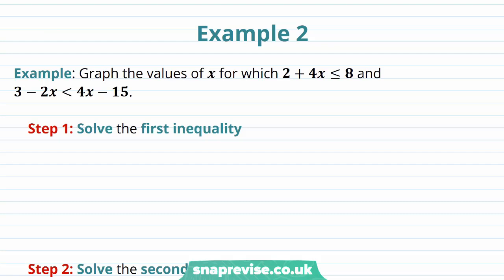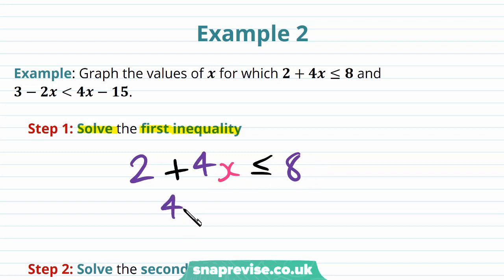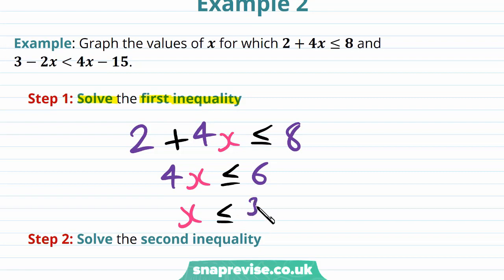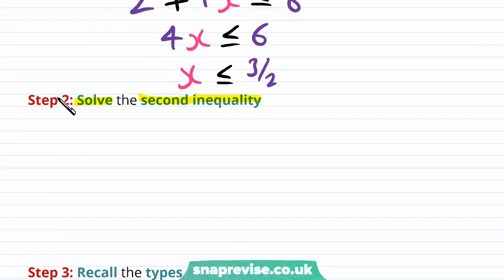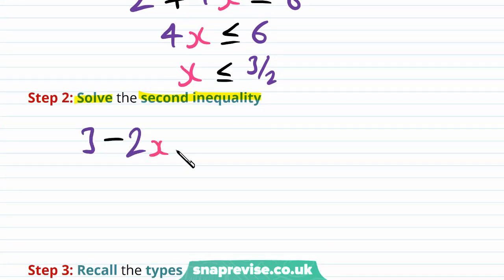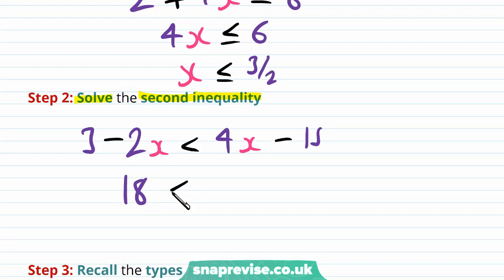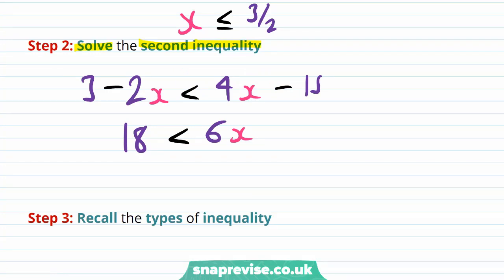Our second example asks us to graph the values of x for which 2 plus 4x ≤ 8, and 3 minus 2x < 4x minus 15. Step 1: solve the first inequality. 2 plus 4x ≤ 8 gives 4x ≤ 6, so x ≤ 3/2. Step 2: solve the second inequality. 3 minus 2x < 4x minus 15. Bringing x terms to the left and numbers to the right gives 18 < 6x. Flipping around to have x on the left — without multiplying by a negative — gives x > 3.